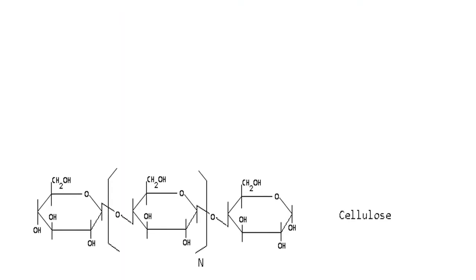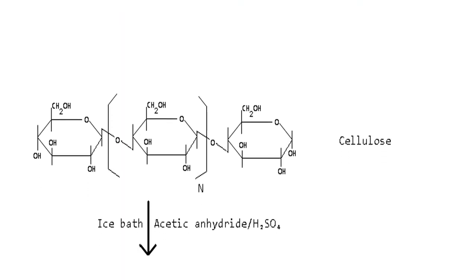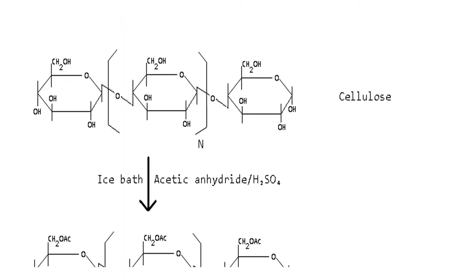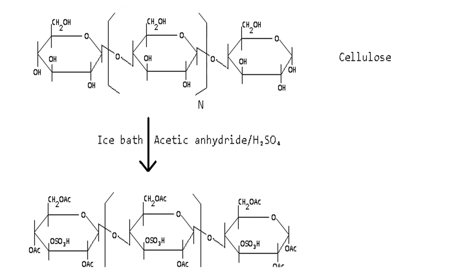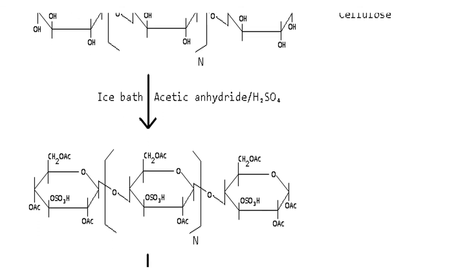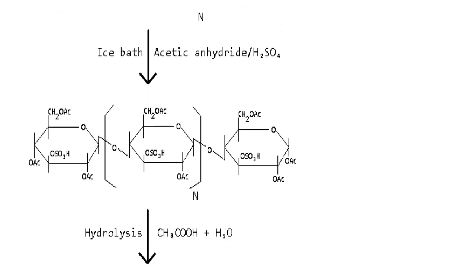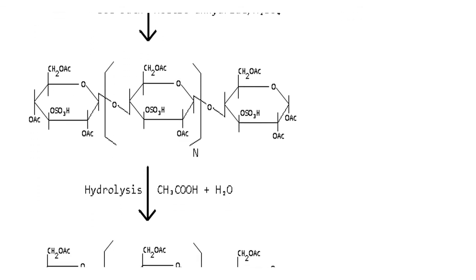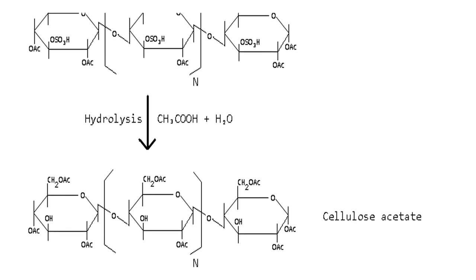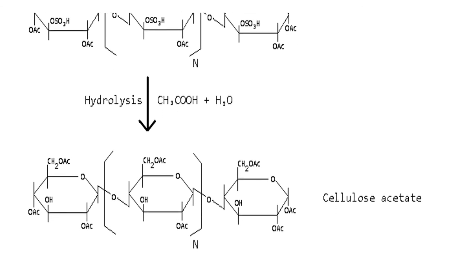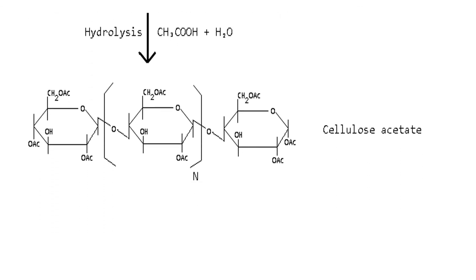If we take a look at the step-by-step process, cellulose is treated with acetic anhydride and acetic acid in the presence of the catalyst in order to obtain the intermediate, which then goes through hydrolysis to yield the final product, cellulose acetate. If you notice, you can see the hydrogens of the hydroxyl groups have already been replaced with acetyl groups.